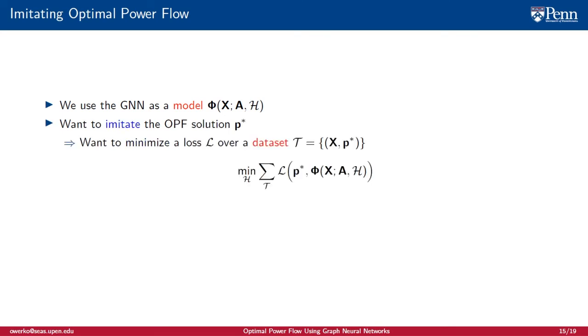We want to train our model to imitate the OPF solution P star. We assume the existence of a dataset T, a set of initial states, and OPF solutions. To train our model, we want to find filters which minimize the total loss over the dataset. We use mean squared error for our loss. Critically, once the model is trained, we no longer need the costly values of P star to make predictions.